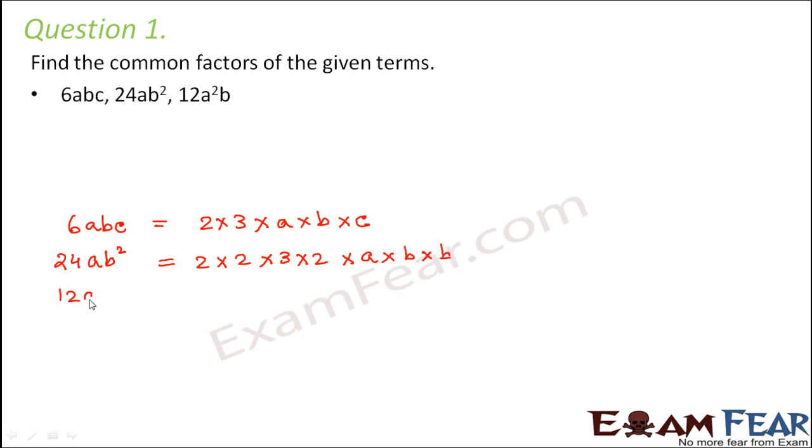Third is 12a²b. So this can be written as 2 into 2 into 3. That is 12. a² is a into a and b is b. So this is how we can write. So we have basically written all the 3 terms in the factor form, in the form of its factors. So now let us look for the common factors.